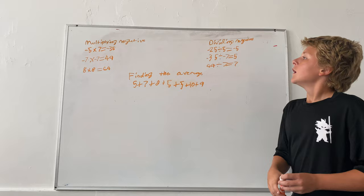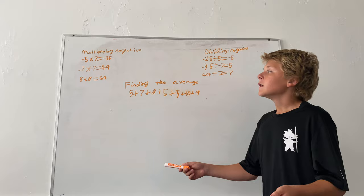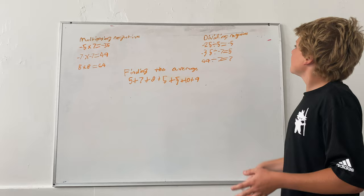So with multiplying negatives, a negative times a positive equals a negative. A negative times a negative equals a positive. And a positive times a positive equals a positive.